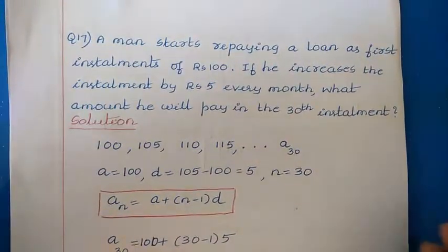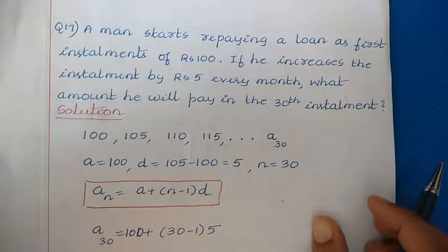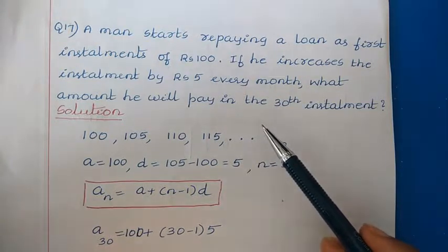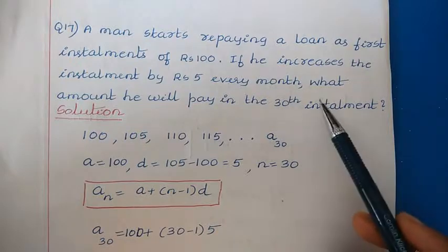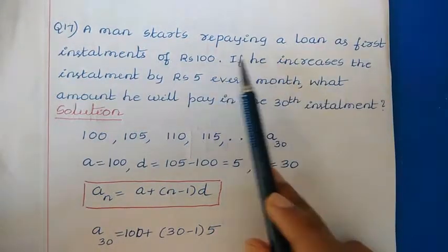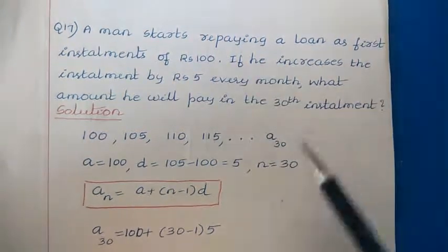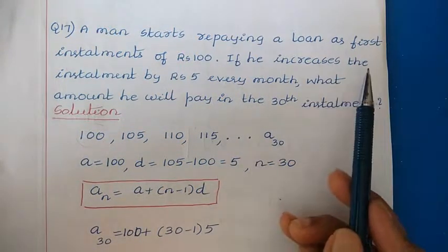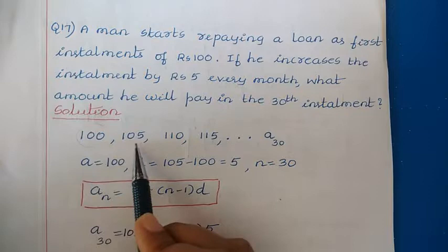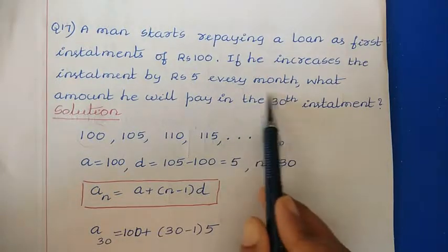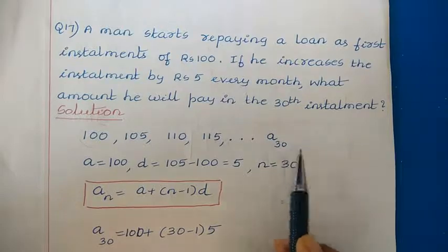Question 17: A man starts repaying a loan with a first installment of ₹100. He increases the installment by ₹5 every month. We need to find the amount he will pay in the 30th installment. The series is 100, 105, 110, 115, ... with first term A = 100 and common difference D = 5.